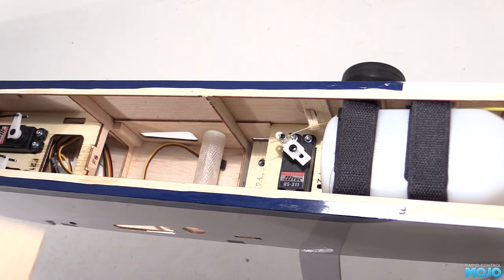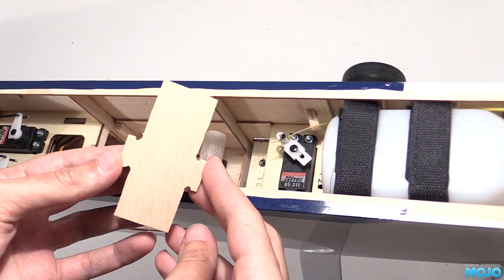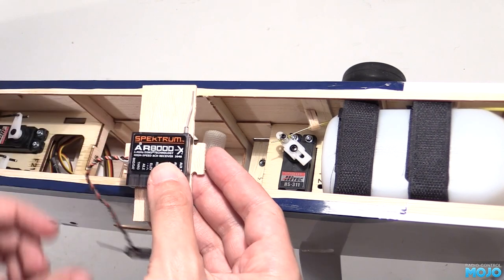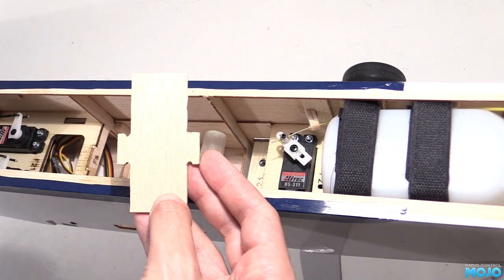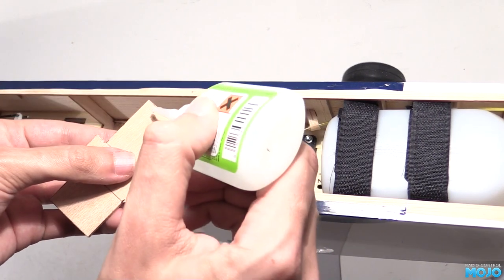To mount the radio I've got a tray from some scrap plywood. The radio fits here and a rubber band goes over the lugs. It fits in the fuselage and sits on top of the side doublers. Simple. Might as well glue it in right away.